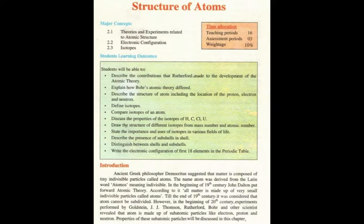Today we are moving towards our new chapter: structure of atoms. As the name indicates, in this chapter we will discuss the structure of atoms, how atoms were discovered, who discovered them, what are the contributions of different scientists towards their discovery, what are the particles of atoms, what are the subatomic particles of atoms, and where these particles are present. We will also discuss theories and experiments related to atomic structures, electronic configuration and isotopes in this chapter.